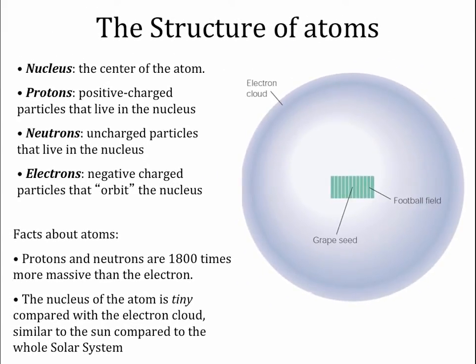In the nucleus of the atom there are two types of particles. Protons have a positive electric charge. Neutrons have no electric charge, and the protons and neutrons both reside in the nucleus of the atom. Electrons have a negative electric charge and reside outside the nucleus in a cloud around the atom.